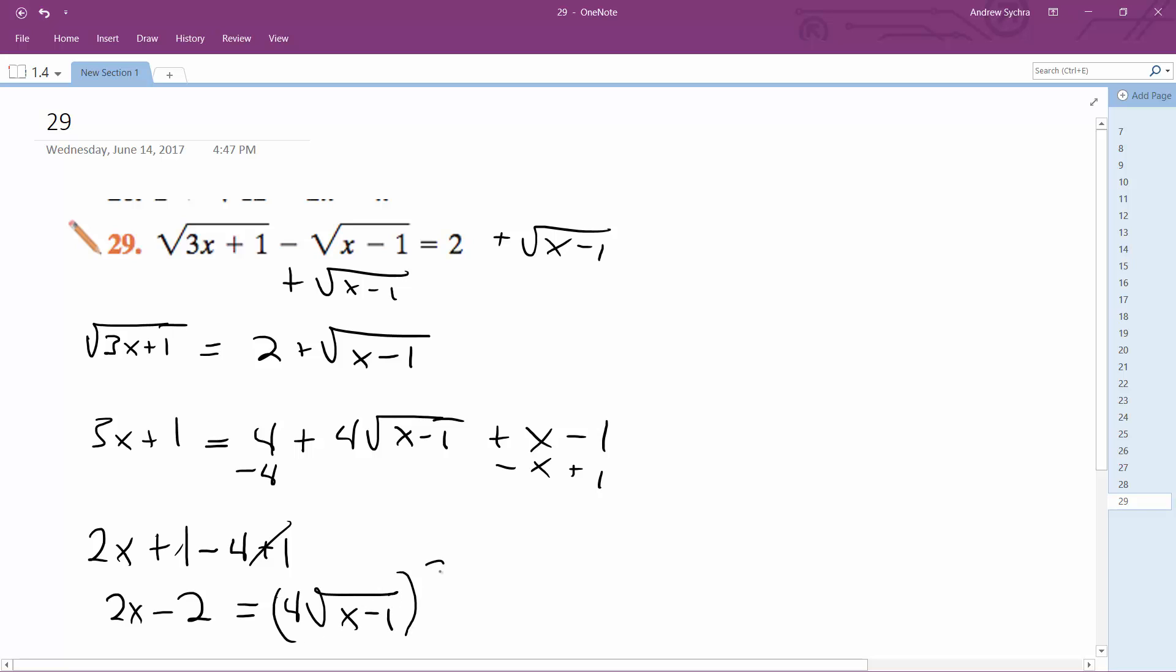Square both sides again. Actually, you know what? Before I do that, I can cancel out a 2. So this, no, sorry. This is x minus 1.